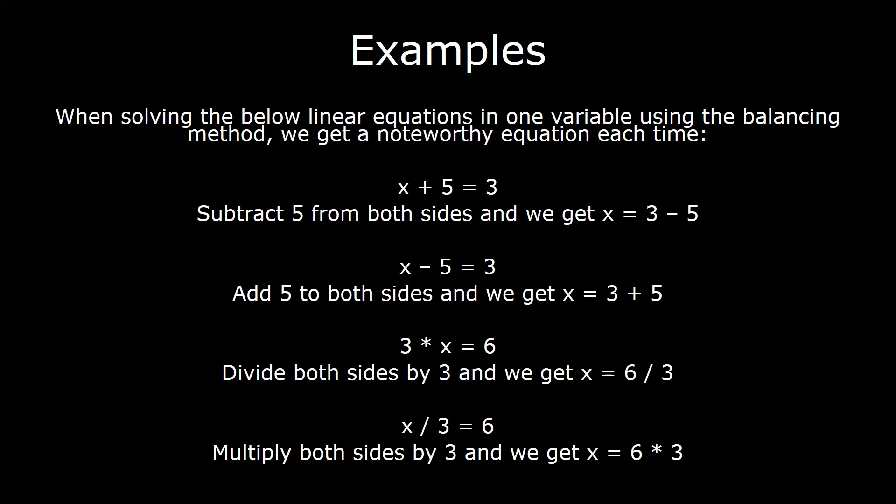I want to pause and point out something. Our starting equation was x plus 5 equals 3. After applying the balancing method, we have x equals 3 minus 5. It's almost like when 5 switched sides from the LHS to the RHS, it went into the exact opposite mode — instead of being added, it became subtracted. So x equals 3 minus 5, giving x equals minus 2.